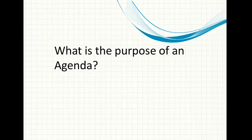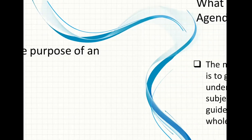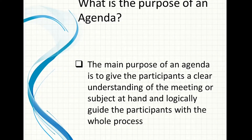So the agenda is used to determine the goal of a meeting. Why do we need to write an agenda? The main purpose of an agenda is to give the participants a clear understanding of the meeting or subject at hand and logically guide the participants through the whole process. The agenda also helps the participants to familiarize themselves with the topics to be discussed.